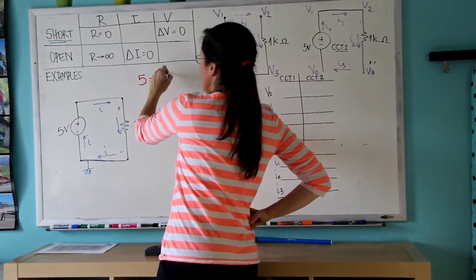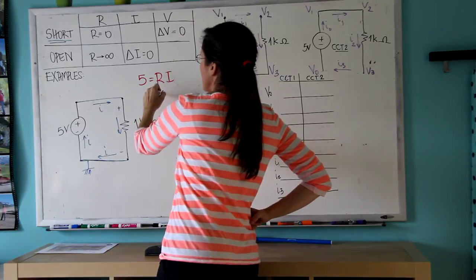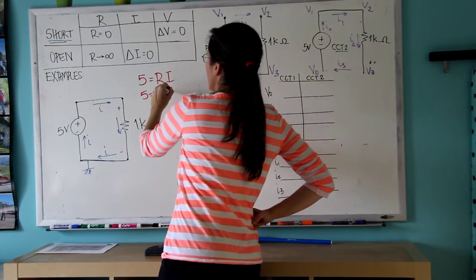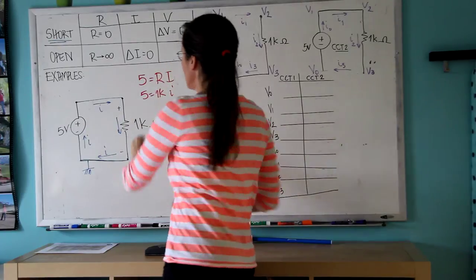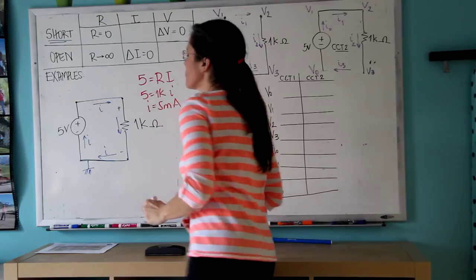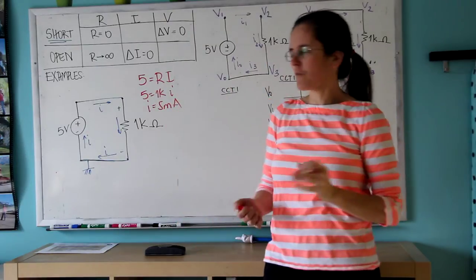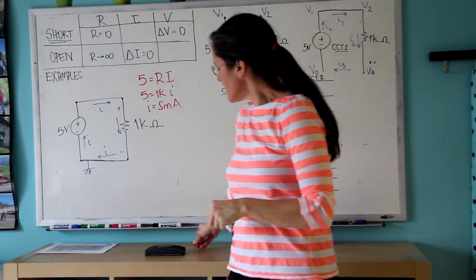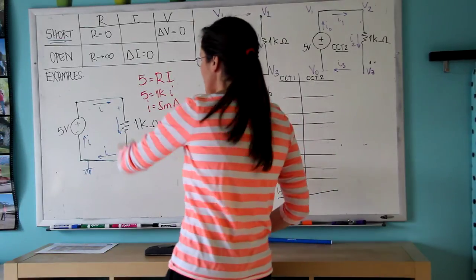V equals IR. It's one kilo ohm, so the current is five milliamps as indicated here. Hopefully you learned this before coming here. The passive convention is what we're going to use throughout the course.